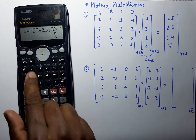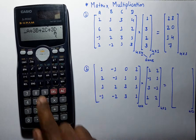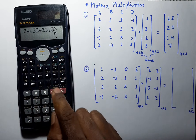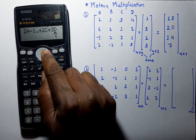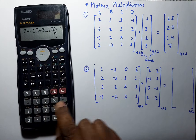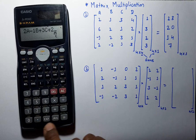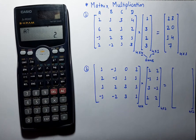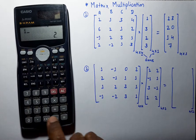Now go to the second problem, which has a 4x4 matrix multiplied by a 4x2 matrix. Edit the same equation with new numbers: 2, minus 1, 3, and the last one is 2. Now press the calculate button and it will ask for a, b, c, and d values.